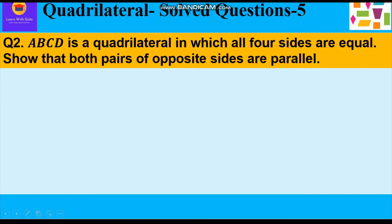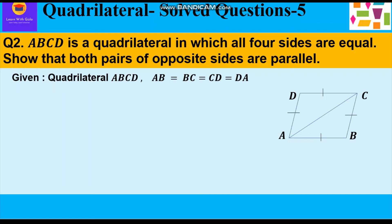Now let's take up the second question. ABCD is a quadrilateral in which all four sides are equal. Show that both pairs of opposite sides are parallel. Given: AB equals BC equals CD equals DA. To prove: AB is parallel to CD and AD is parallel to BC, that is both pairs of opposite sides are parallel. We know that in a quadrilateral, if both pairs of opposite sides are parallel it becomes a parallelogram, but here we only need to prove the sides are parallel, not explicitly state it is a parallelogram.